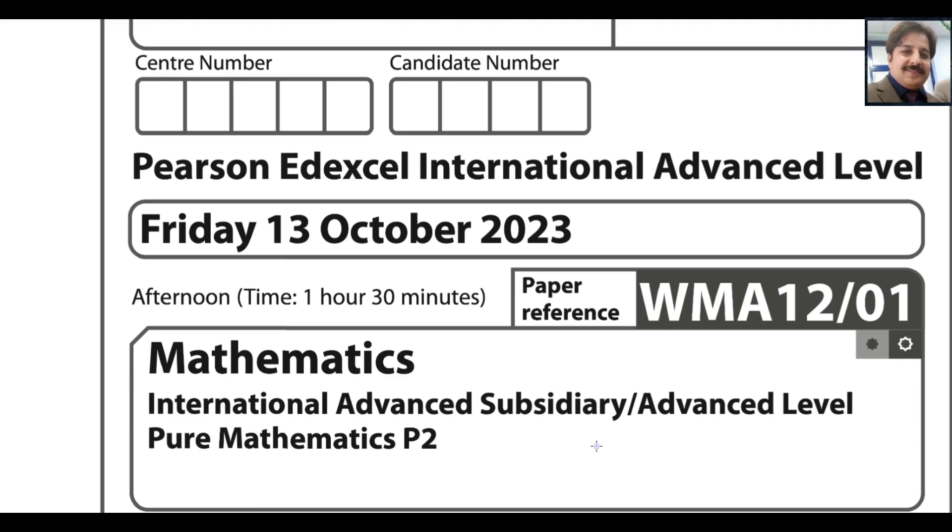Bismillah ar-Rahman ar-Rahim, in the name of Allah most gracious most merciful. This is Pearson Edexcel International A Level exam for Pure Math 2. Paper reference code is WMA 12-01, exam was taken Friday 13th of October 2023.